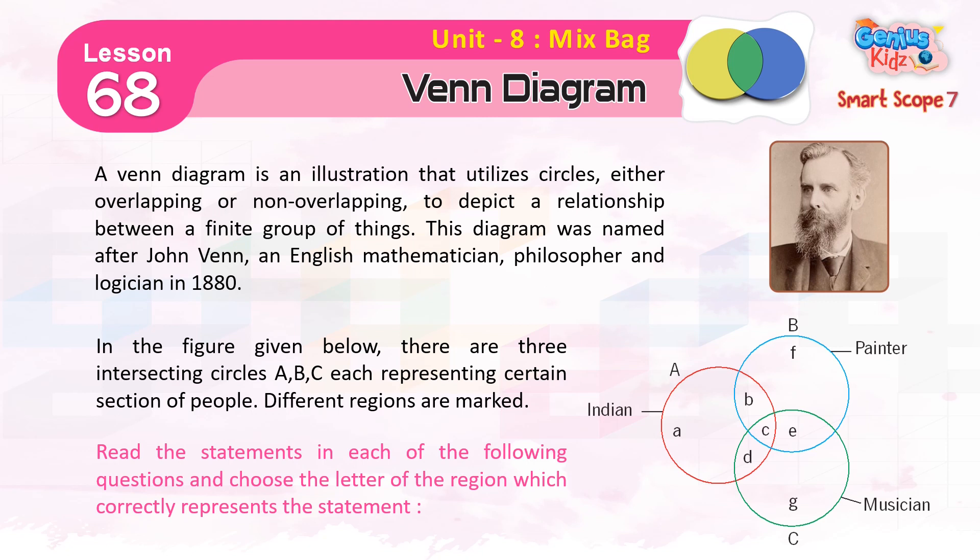In the figure given below, there are three intersecting circles A, B, and C, each representing a certain section of people. Different regions are marked. Read the statements in each of the following questions and choose the letter of the region which correctly represents the statement.